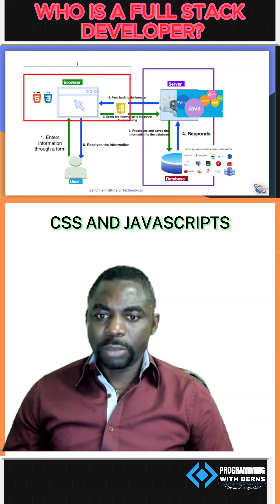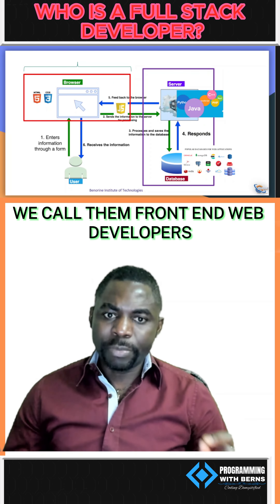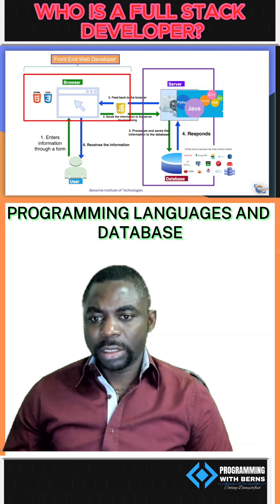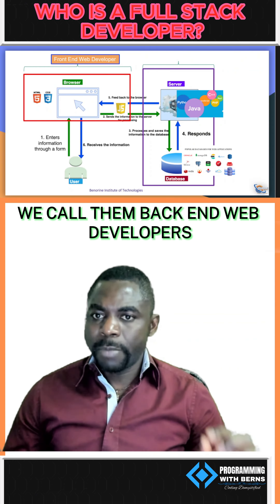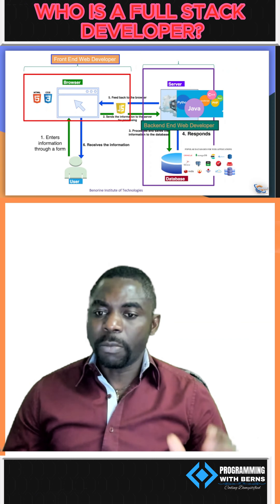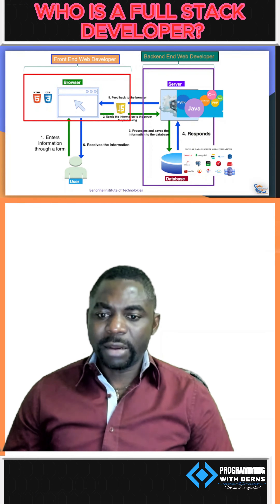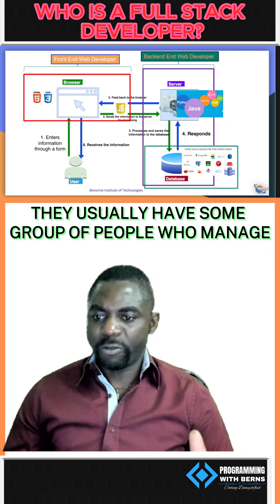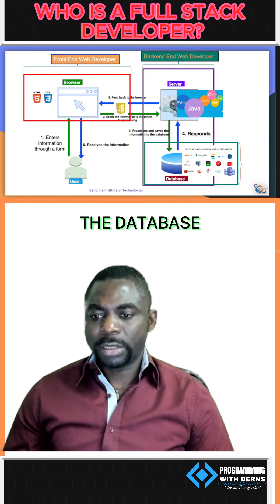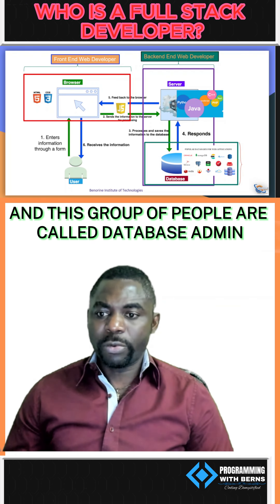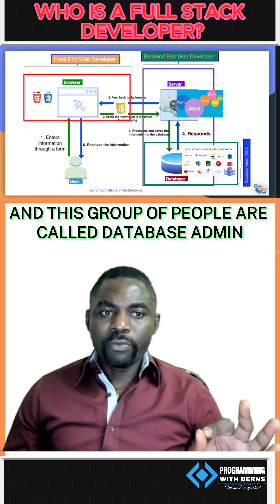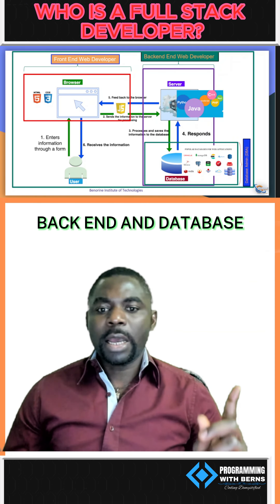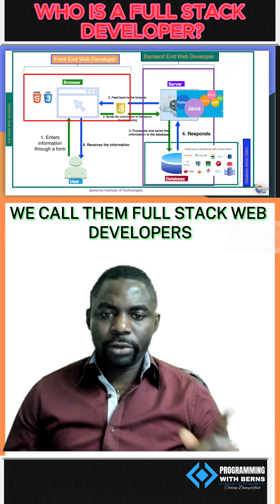So who does what? Those who work with HTML, CSS, and JavaScript — we call them front-end web developers. Those who master the server programming languages and the database — we call them back-end web developers. In some big organizations, they have a separate group of people who manage the database, called database admins. Those who can manage all of these — front-end, back-end, and the database — we call them full-stack web developers.